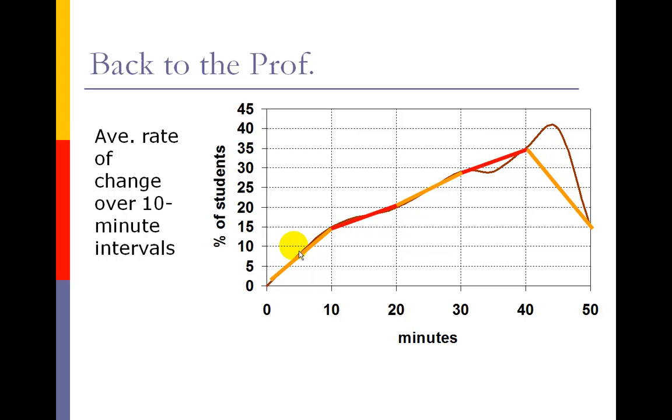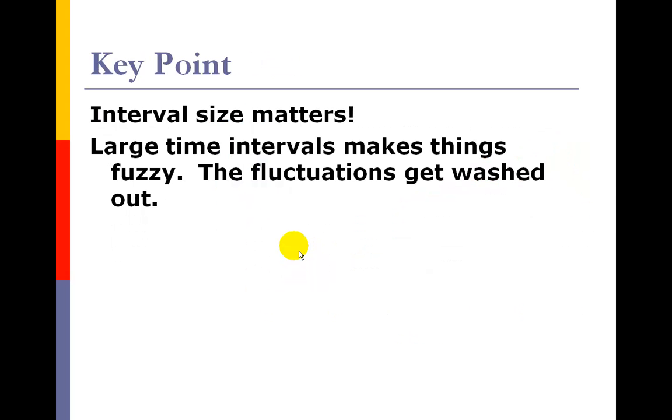Basically what we're looking at here is four out of the five periods of time have a positive slope, and that should give enough evidence there. If we're looking at rates of change, that should provide enough evidence for the Dean to say something is happening in that class.